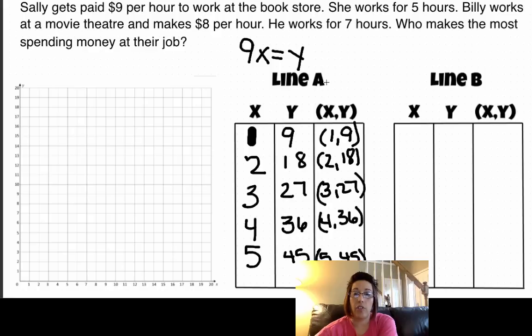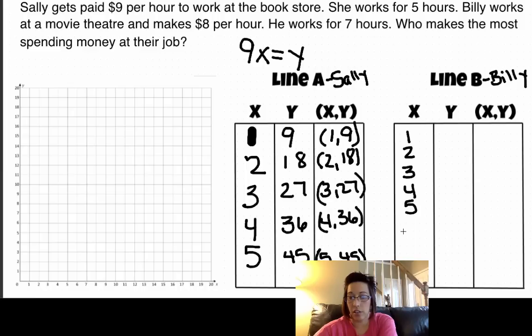There is Sally's work history. I'm going to label this Sally and label this Billy. So for Billy, he works for seven hours. And for seven hours, he makes $8 per hour. So $8 times X, the hours worked, equals Y or the total amount he makes.